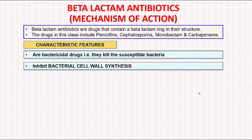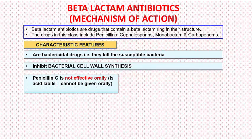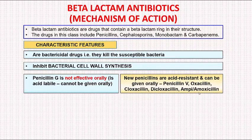Penicillin G had a lot of limitations for clinical use. First, penicillin G is not effective orally — it is broken down by acid in the stomach. New penicillins that are now available are acid-resistant and can be given orally, such as penicillin V or phenoxymethylpenicillin, oxacillin, dicloxacillin, amoxicillin, ampicillin, etc.